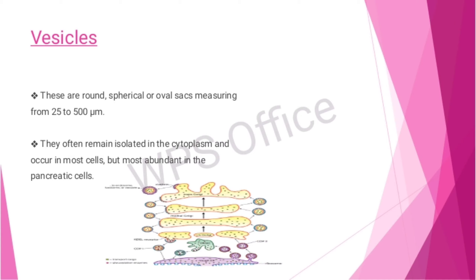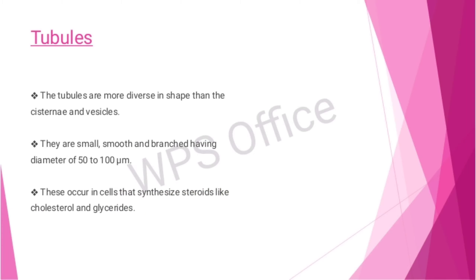Vesicles are round, spherical, or oval sacs measuring from 25 to 500 micrometers. They often remain isolated in the cytoplasm and occur in most cells, but are most abundant in pancreatic cells.